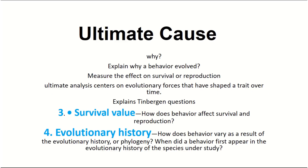Ultimate analysis explains the question of 'why' — why a behavior evolved — and measures the effect on survival and reproduction. Ultimate analysis centers on evolutionary forces that have shaped a trait over time. It explains two questions: survival and evolutionary history. The survival question asks how behavior affects survival and reproduction.